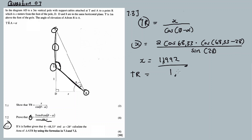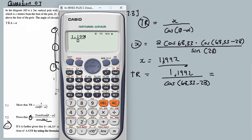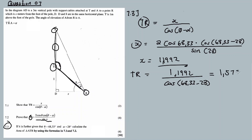Now TR equals X over cos(θ minus α). Substituting X equals 1.9920 divided by cos(68.33 minus 28) gives 1.9920 divided by cos(40.33). This equals approximately 1.5731 to four decimal places. So TR is 1.5731.